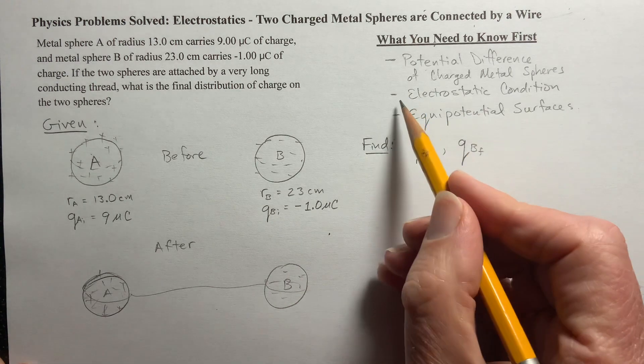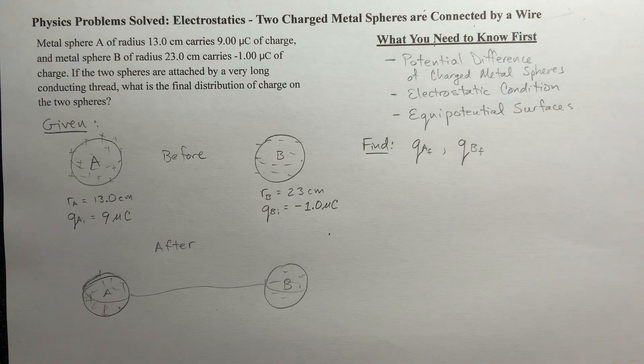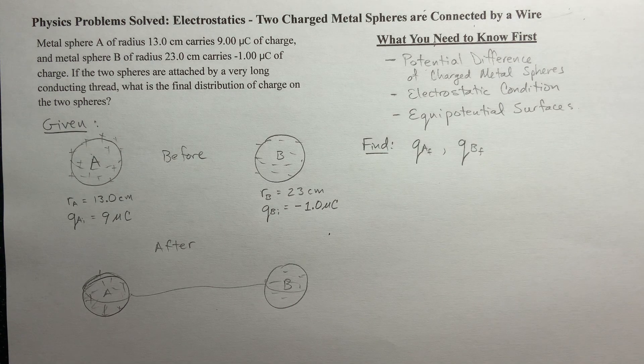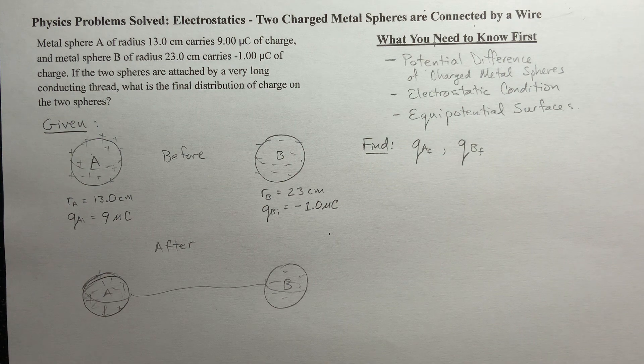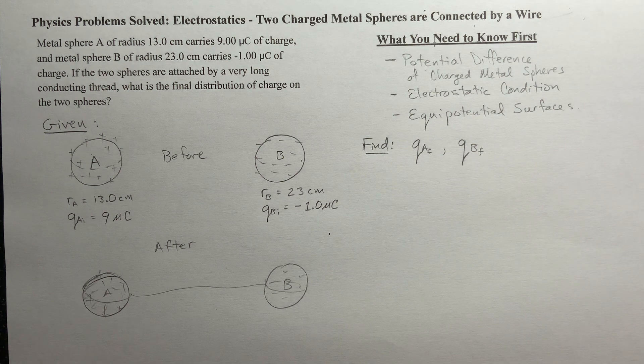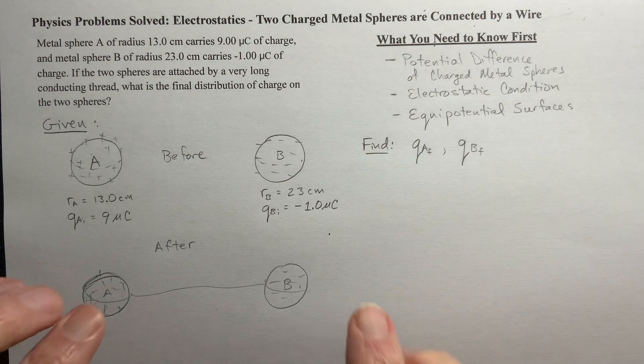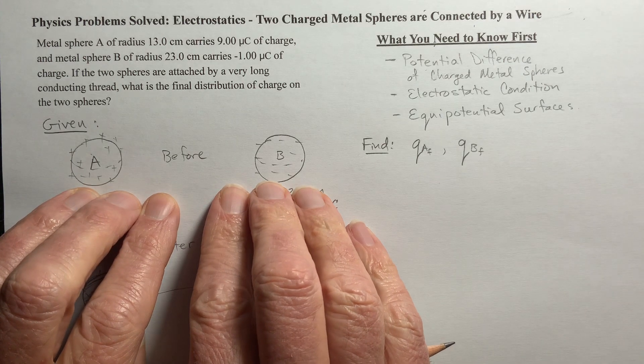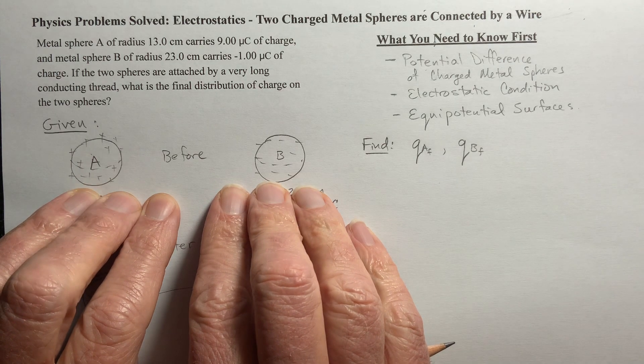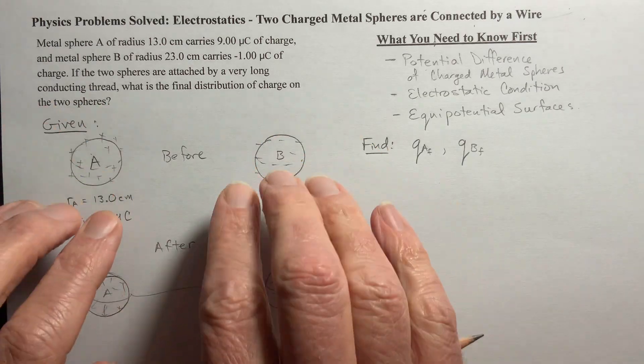Now I want to talk about what I mean by an electrostatic condition. Electrostatic condition means that you're looking at the situation when charge isn't flowing anymore. So now, this before, is an electrostatic condition because the charges aren't moving.